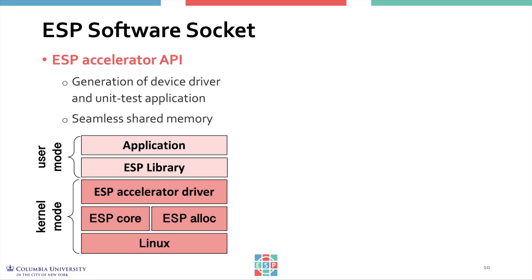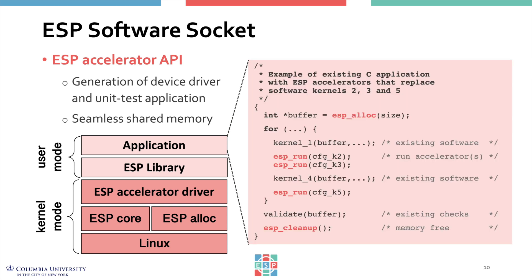For a given application, the software execution of a computationally intensive kernel can be replaced with one or more hardware accelerators by means of a single function call. For example, the figure shows the case of an application with five kernels: two executed in software and three implemented with an accelerator. Data are shared across accelerators and processors, and no data copies are necessary.